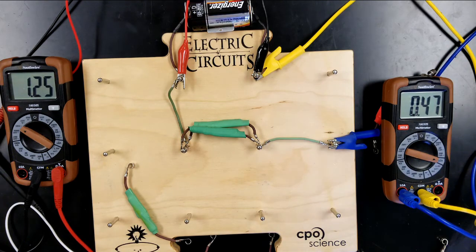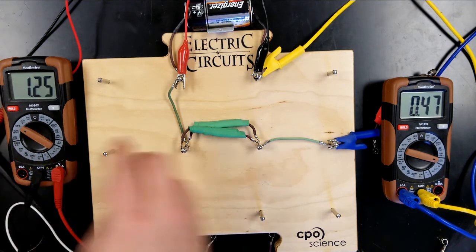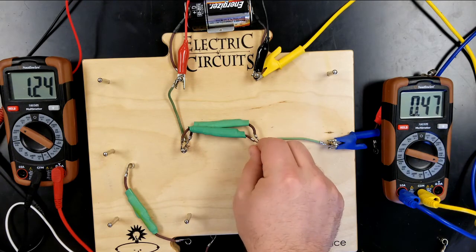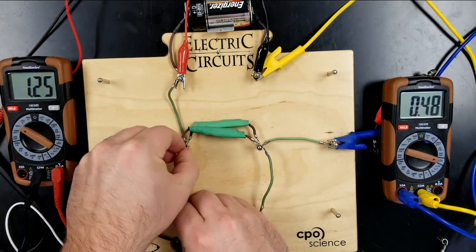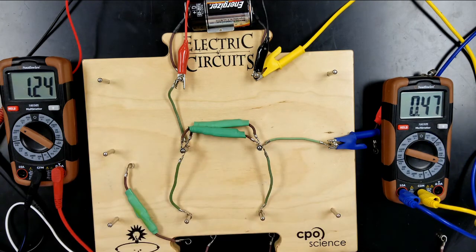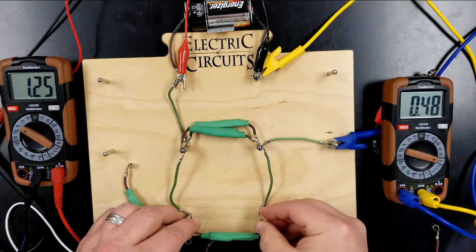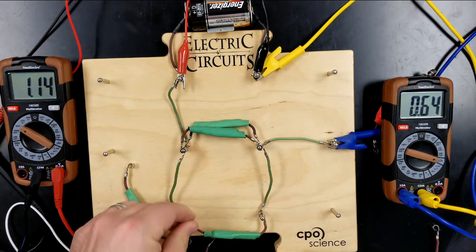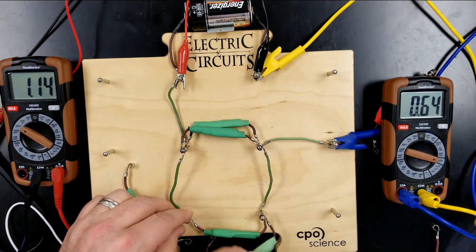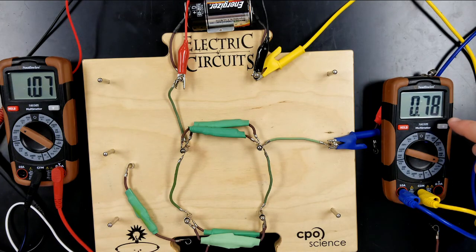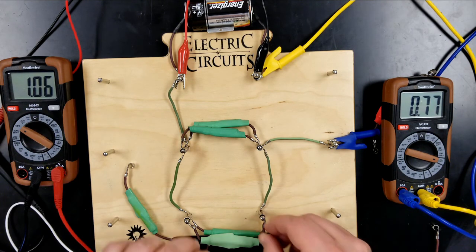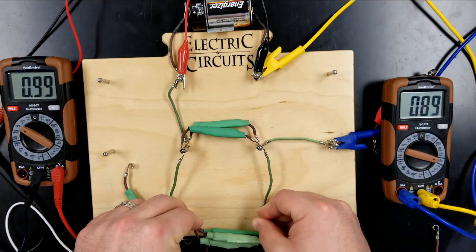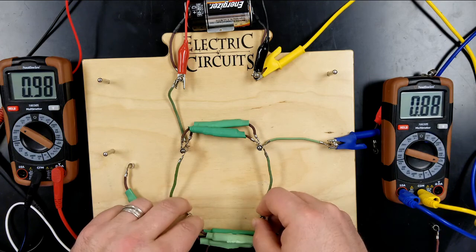0.65, 1.14 volts. We can add some more—I'm kind of running out of room on the circuit board. Let's add some wires and go over here. Let's put two greens in parallel on this guy. All right, so current of 0.78, 1.06 volts. I think we fit one more on here: 0.89 and 0.99 volts.